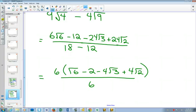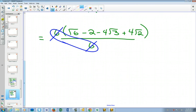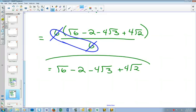And then I look at my fraction in front. Is that lowest terms? No. 6 divided by 6? Well, those will simplify to just be 1. And our final answer is just root 6 minus 2 minus 4 root 3, plus 4 root 2.